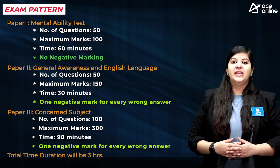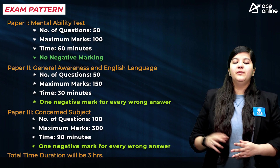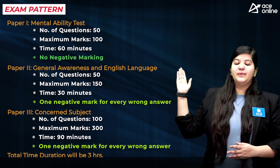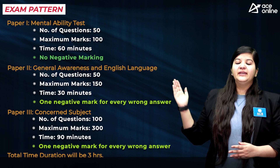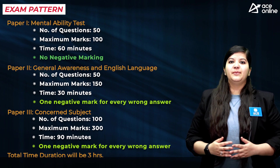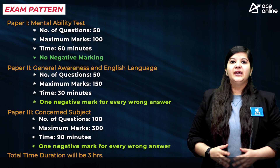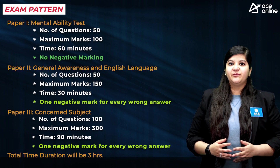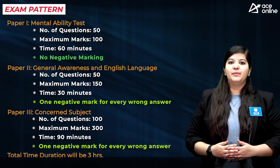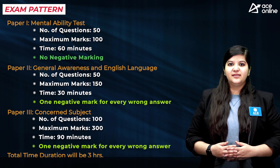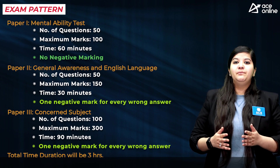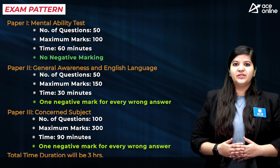The total time duration to attempt all three papers will be three hours. Paper 1 questions will be from mental ability, Paper 2 from general awareness and English comprehension, and Paper 3 from the concerned discipline knowledge. In Paper 1 there will be no negative marking, while in Paper 2 and Paper 3 there is a negative marking of one mark for each wrong answer.